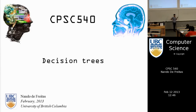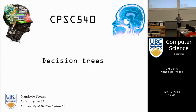Decision trees are a very popular technique in machine learning. They used to be used a lot two to three decades ago, but they sort of fell out of fashion because they don't tend to generalize very well. They have some very nice properties, but because of their inability to be very good at predicting, folks stopped using them.